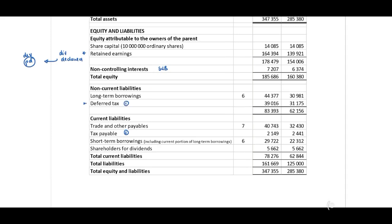Remember, when we need to determine our tax payable, we need to first reconcile our deferred tax account to be able to calculate the tax payable, which should be included on the face of our cash flow statement. We have short-term borrowings including the current portion of long-term borrowings. Therefore we are able to identify that there is a long-term borrowings component whose current portion is included in our short-term borrowings line item. There is also shareholders for dividends — important to identify dividends declared and paid.